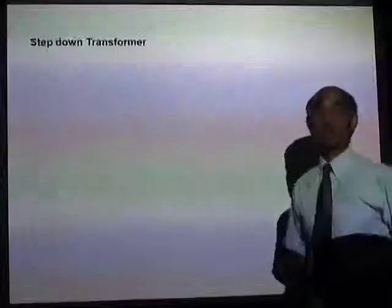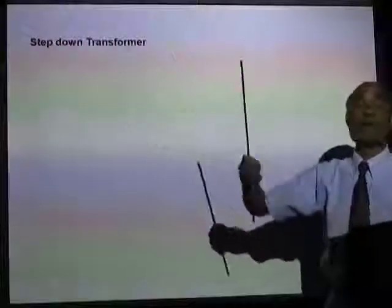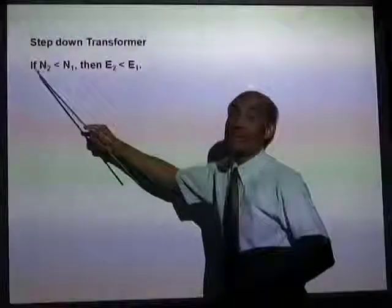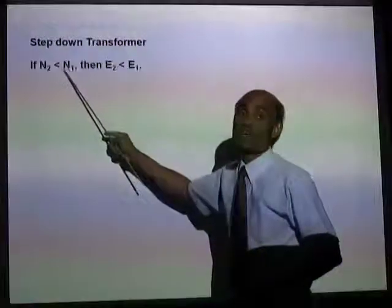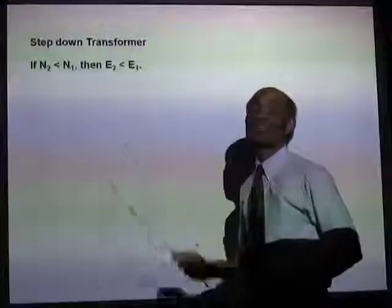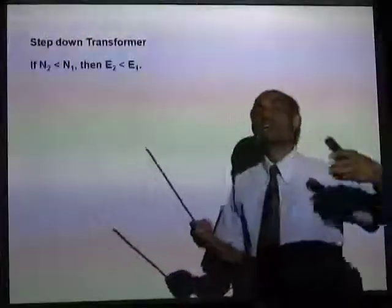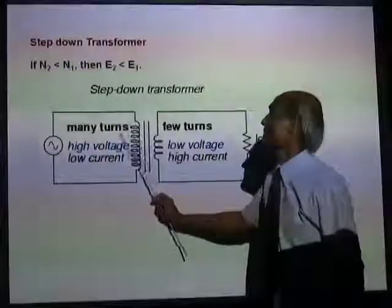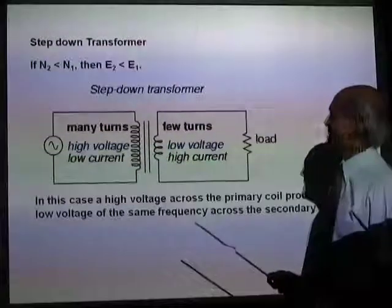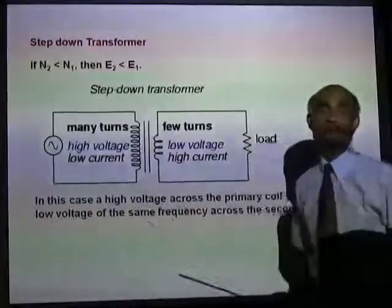This means you can have either a step-down or a step-up transformer. If N2 is less than N1 — the number of turns in the secondary is less than in the primary — then the output voltage will be less than the input voltage. From a high voltage AC you can obtain a low voltage AC. This kind of transformer is called a step-down transformer.